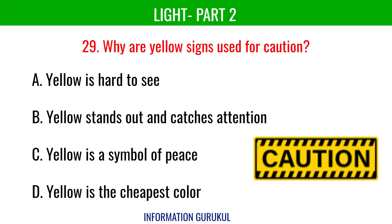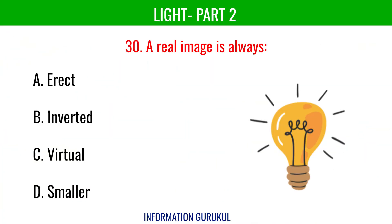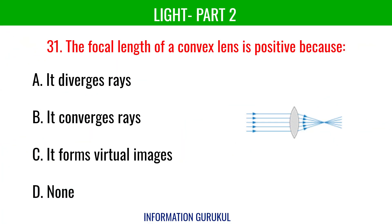Why are yellow signs used for caution? Yellow stands out and catches attention. A real image is always inverted. The focal length of a convex lens is positive because it converges rays.